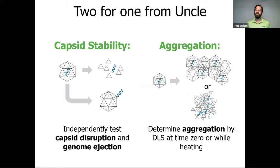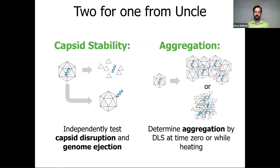UNCLE looks at two different kinds of AAV stability: capsid stability and aggregation. Capsid stability can be broken down into two types — capsid disruption, where the entire capsid falls apart, and genome ejection, where the genome gets ejected from the capsid while the capsid remains mostly intact. There's also aggregation, which can be intact capsids sticking together or disrupted broken-down capsid proteins sticking together.